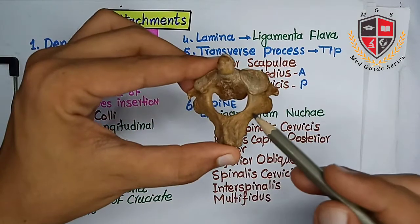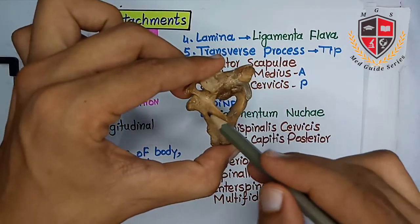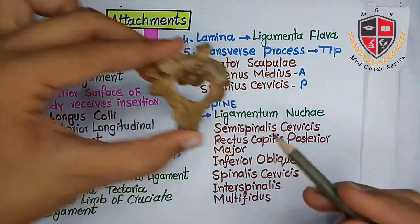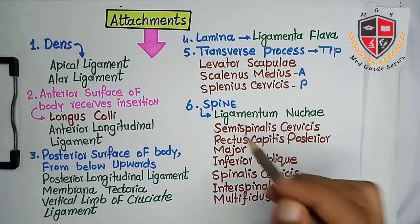This is the lamina. It gives attachment to ligamenta flava.